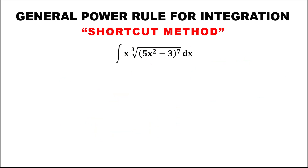For the final given, we have the cube root of the quantity (5x squared minus 3) to the power 7. Since this has x squared inside, then there must be x outside. To find the integral, since there is no constant, this is 1, then over the derivative of 5x squared, which is 5 times 2 equals 10.